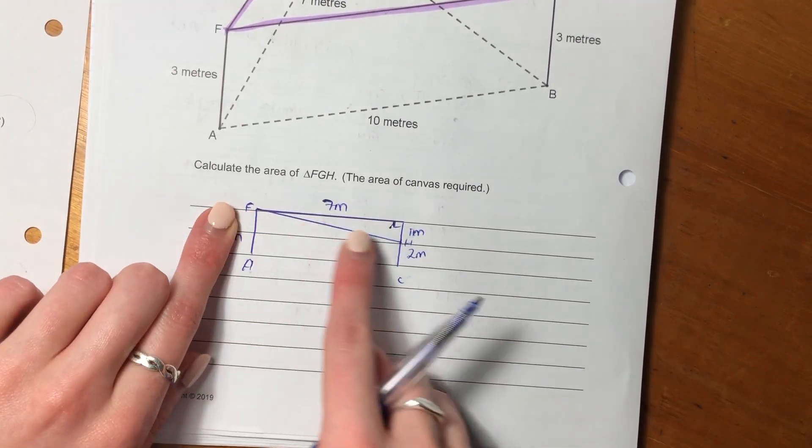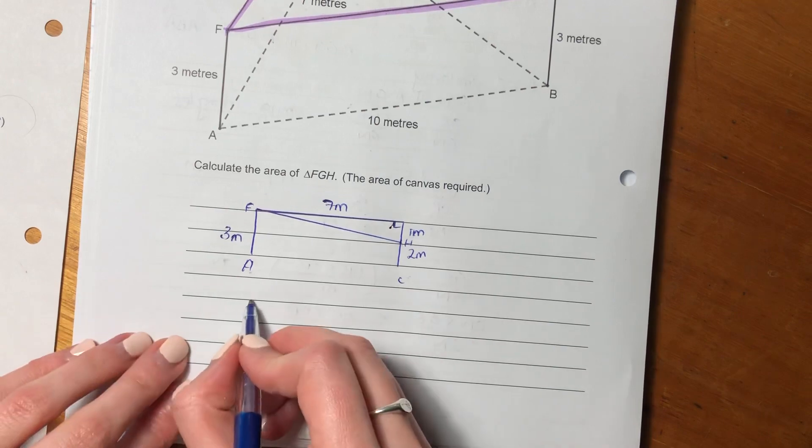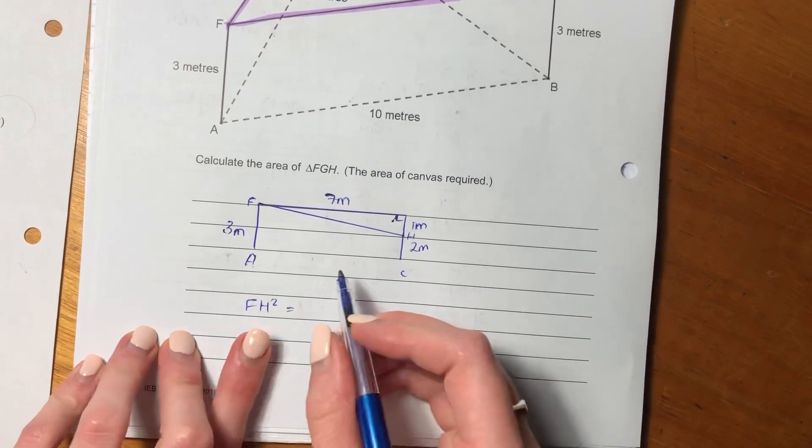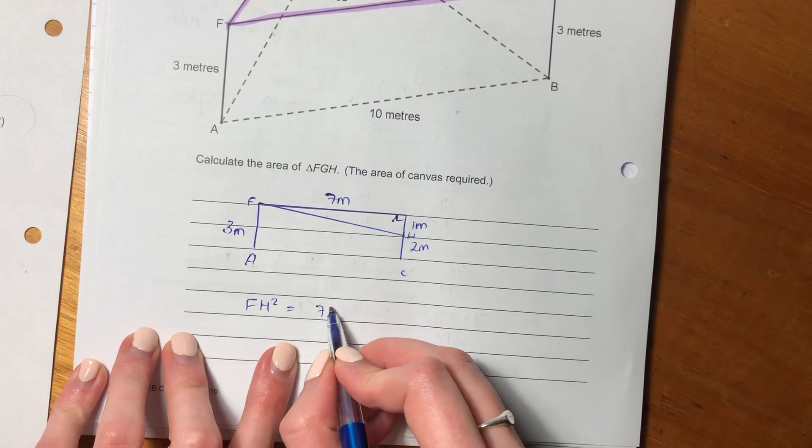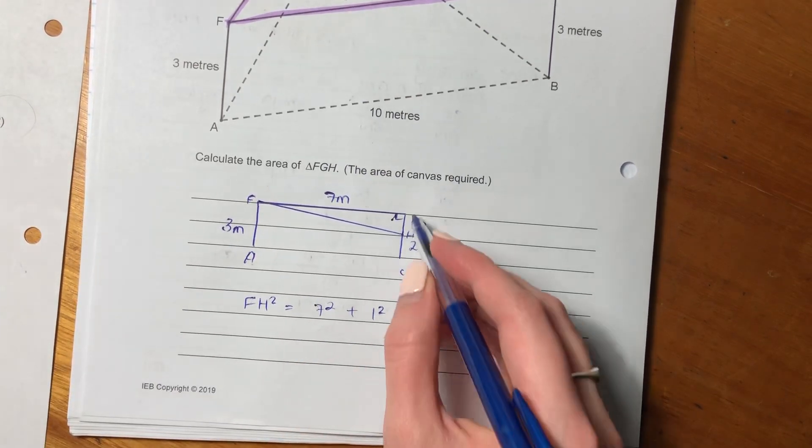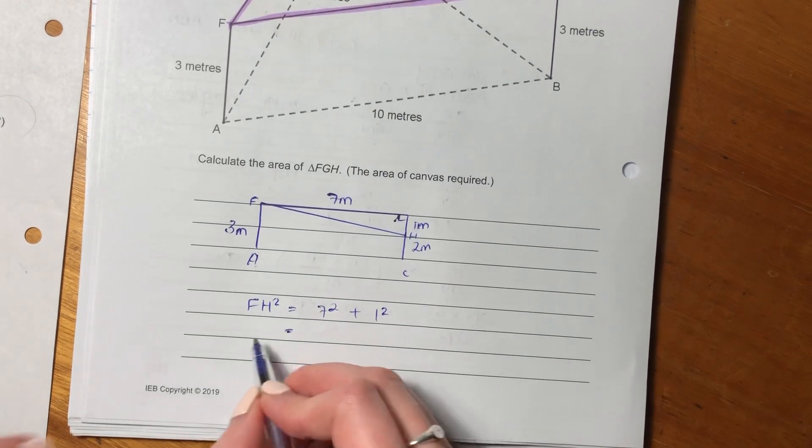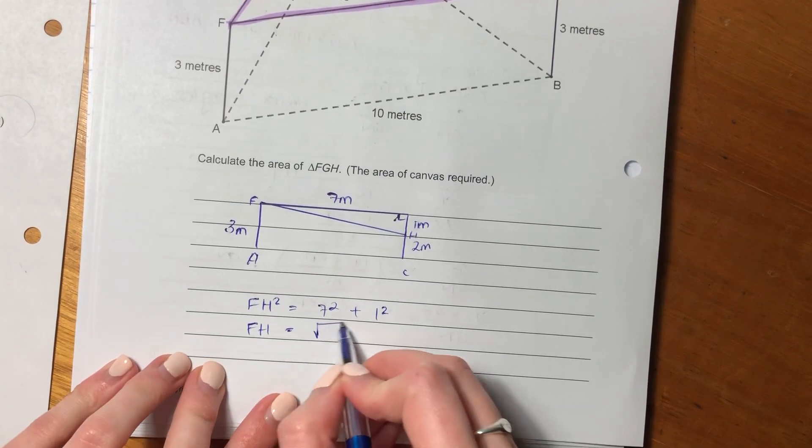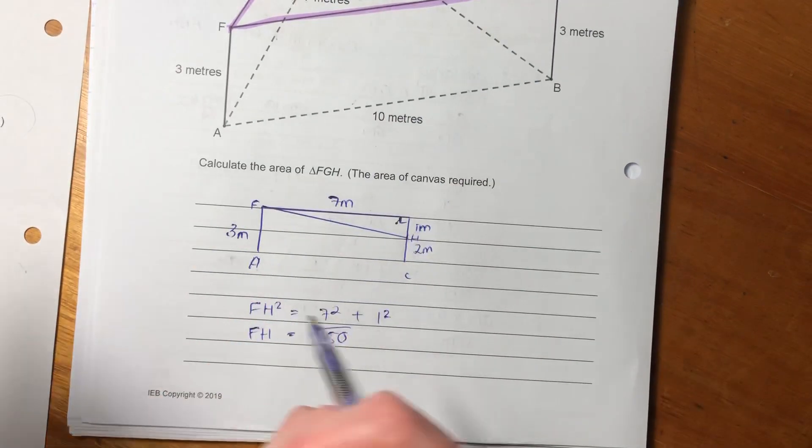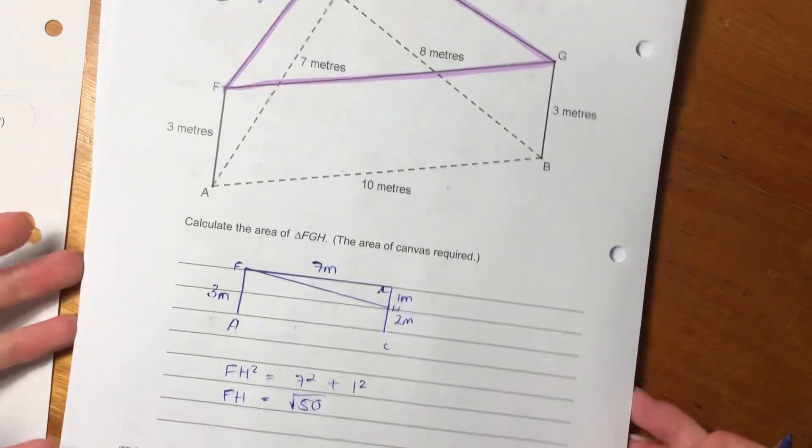So we want to find the length of FH. So we say FH squared. So we're just going to use our good old Pythag. FH squared is seven meters squared plus one meter squared. And then that equals, so FH is going to be the square root of 50. Perfect. So now we've found our one length. So we have the one length, let's just try to find the other length.